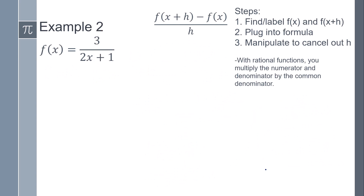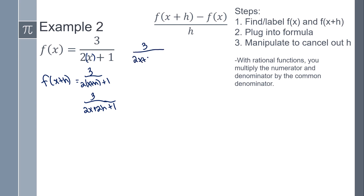Let's look at the next one. Set it up the same — we have our f(x), and now we need our f(x+h). So that's going to be 3 over — remember that's a blank — so 2 times blank plus 1, which gives us 3 over (2x+2h+1). And so now plugging them in: 3 over (2x+2h+1), minus 3 over (2x+1), all over h.